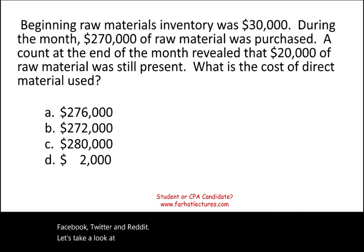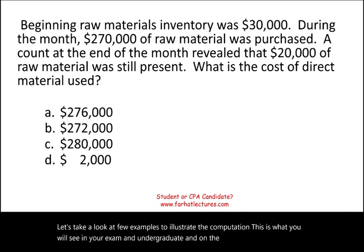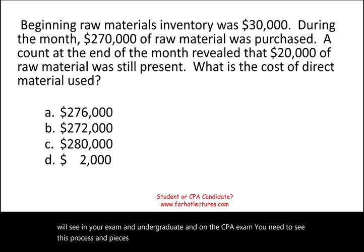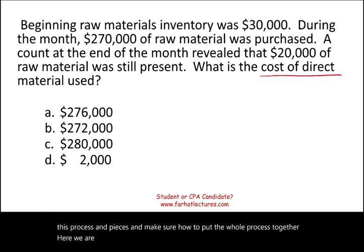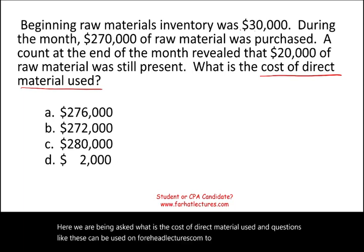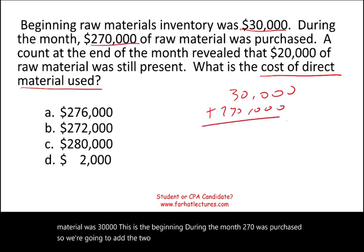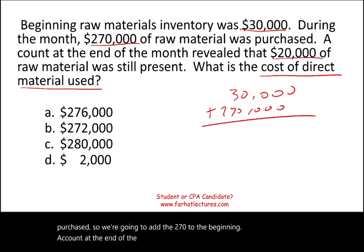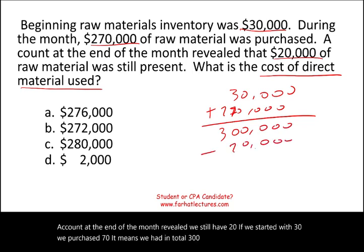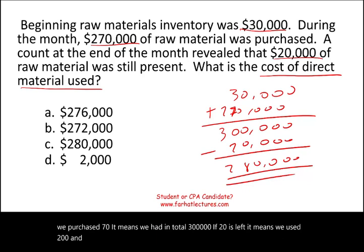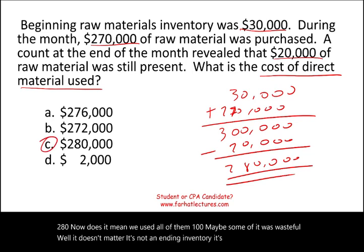Let's look at a few examples to illustrate the computation. We're asked: what is the cost of direct material used? Beginning raw material was $30,000. During the month, $270,000 was purchased, so we add that to the beginning. A count at end of month revealed $20,000 remaining. Starting with $30,000, purchasing $270,000 gives $300,000 available. With $20,000 left, $280,000 of raw material was used in operation. The answer is $280,000.